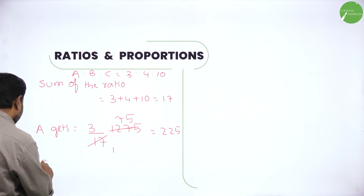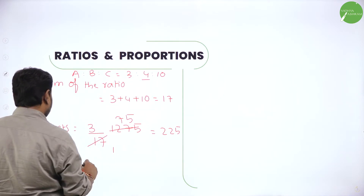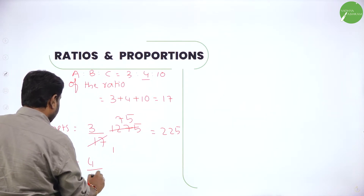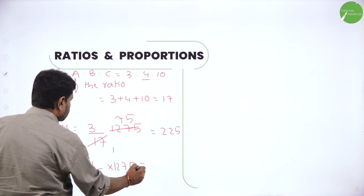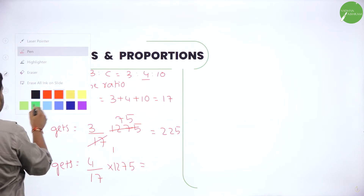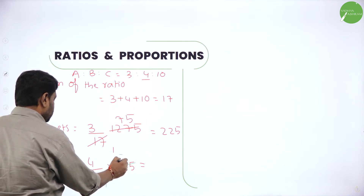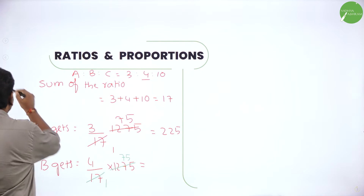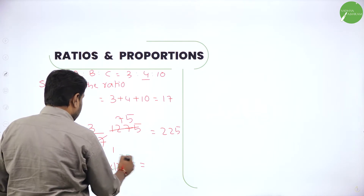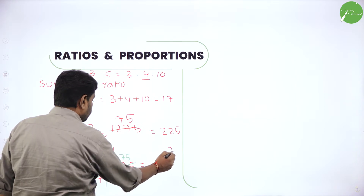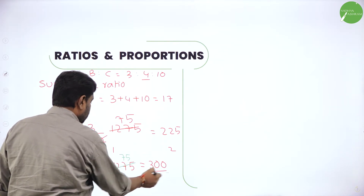Now B gets — what is the ratio of B? 4 out of sum of the ratio, which is 17, into total amount ₹1,275. If I divide: 17 ones are 17, remainder 75. So 4 into 75: 4 times 5 is 20, 4 times 7 is 28, 28 plus 2 is 30 — 300 rupees. B gets 300 rupees.